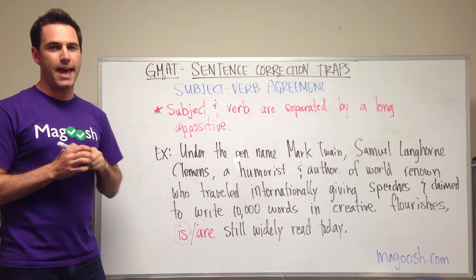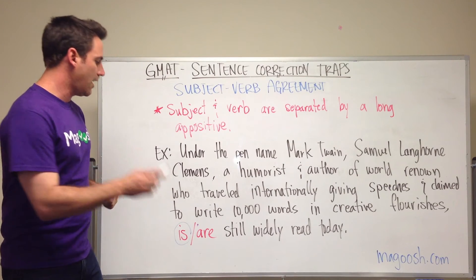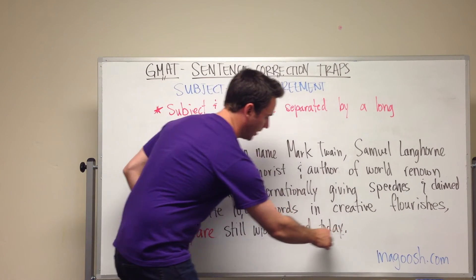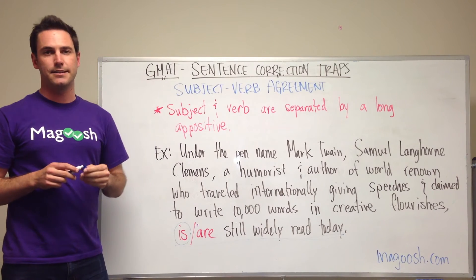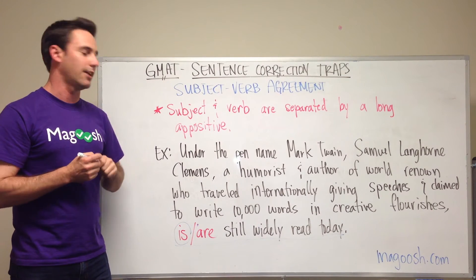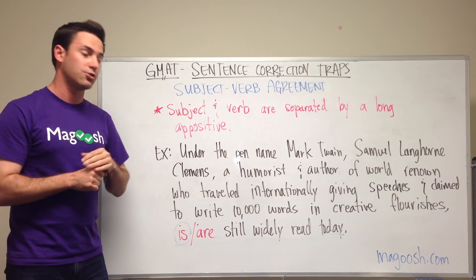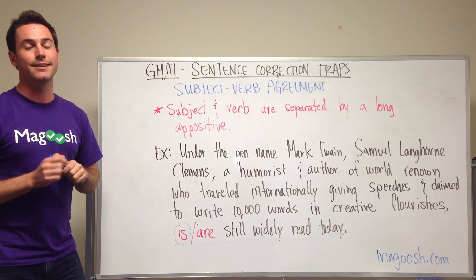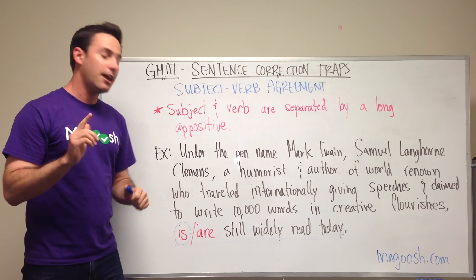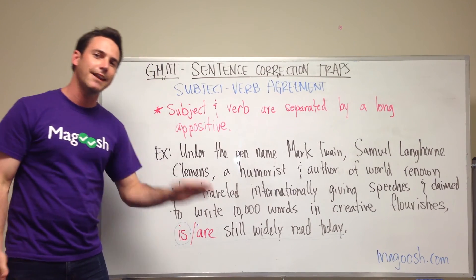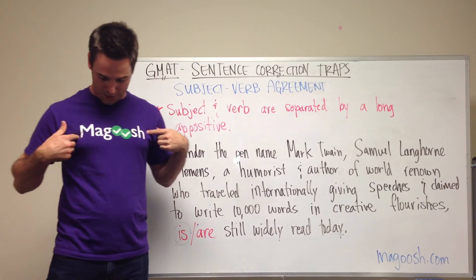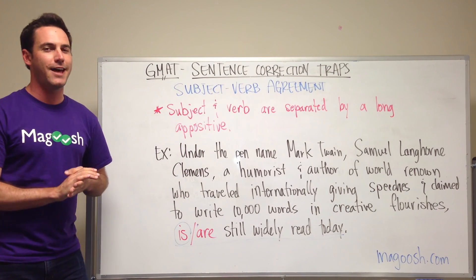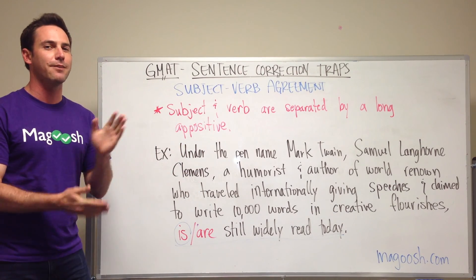On the test, you may find that they underline just this portion of the sentence, and that's what you'll be looking at when deciding which answer choice to choose. So remember, just ignore everything in between the subject and the verb. If you need any more GMAT tips, head on over to Magoosh — M-A-G-O-O-S-H dot com forward slash GMAT — and we have lots of tips for you.